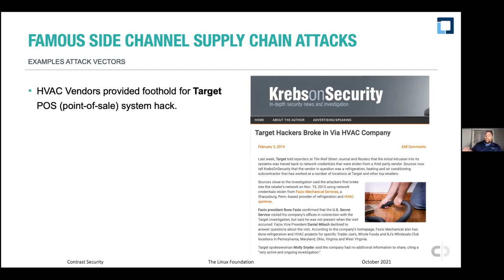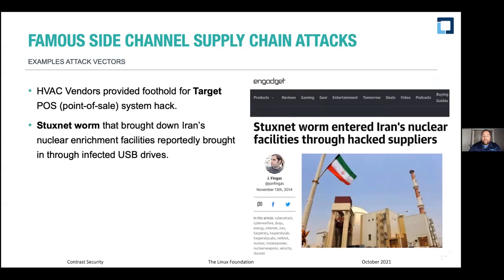Once attackers were on the internal network, they could attack and exploit the point-of-sale system and exfiltrate credit card and customer information. It was right after Black Friday, so they pulled a ton of data — all because an HVAC vendor came in and plugged into the network. Another famous side-channel supply chain attack was the Stuxnet worm, which brought down Iran's nuclear enrichment facilities.